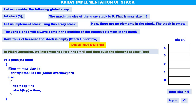Let us see the push operations: push 10 — top becomes 0, 10 is pushed. Push 20 — top becomes 1, 20 is pushed. Push 30 — top becomes 2, 30 is pushed. Push 40 — top becomes 3, 40 is pushed. Push 50 — top becomes 4, 50 is pushed. Now the stack is full because top equals max size minus one, therefore we cannot do any more push operations.